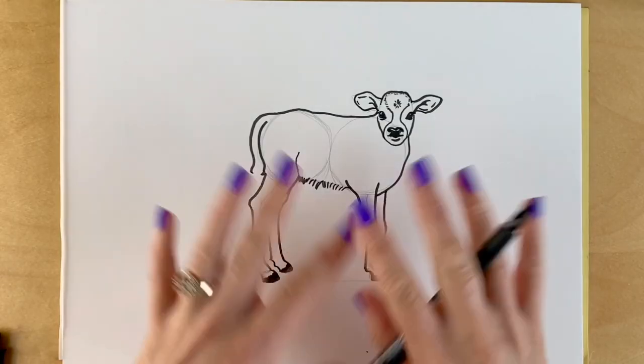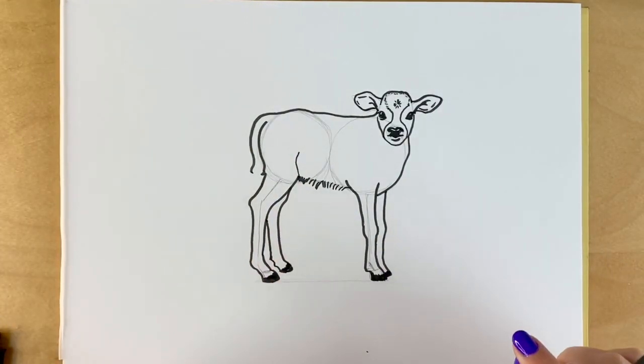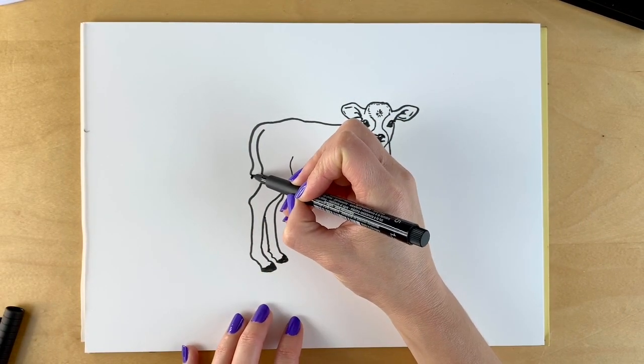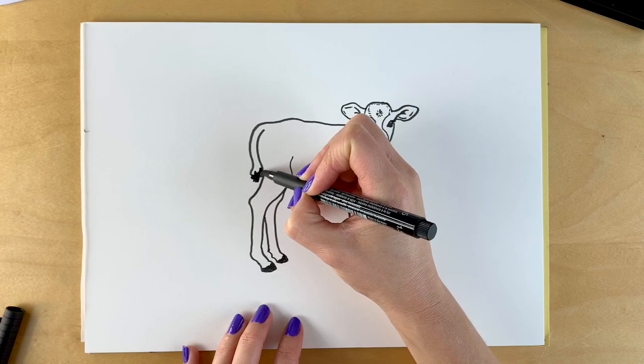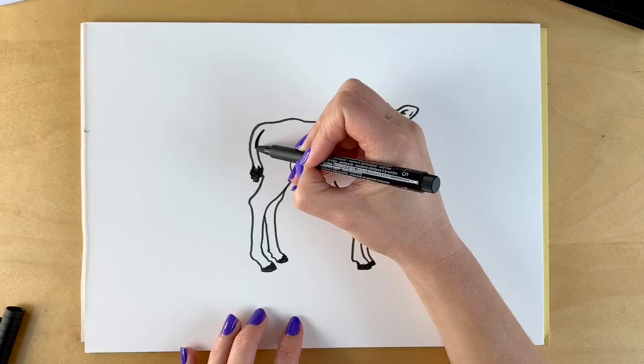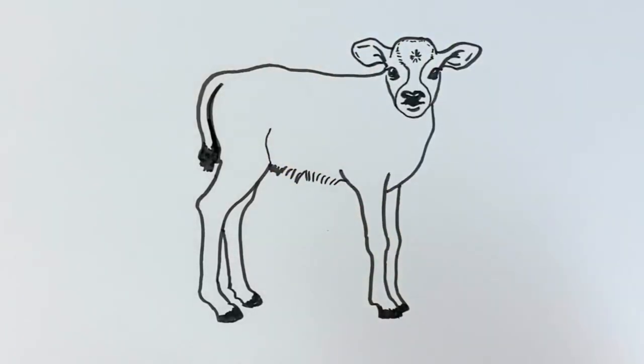Now I'm going to erase all the pencil lines. And if you haven't gone over it already in pen, go over it in pen. And then erase all the pencil lines. Okay. So I've erased all the pencil lines. I'm just going to finish off this tail. At the back there. I'm just going to add another line just to make it darker there for the shadow.